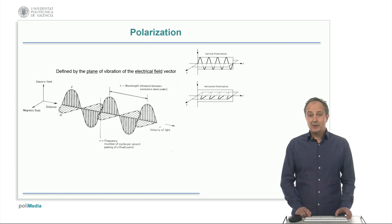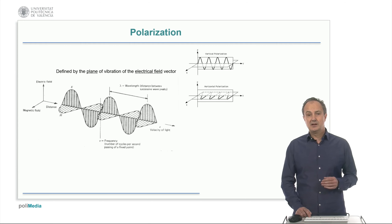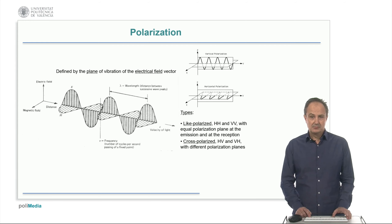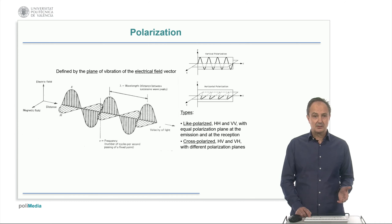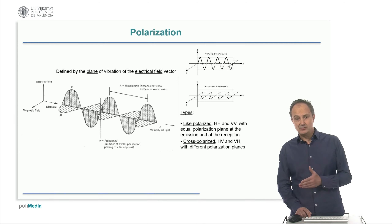Electromagnetic radiation propagates orthogonally to the electric and magnetic fields. The polarization component of a system is defined by the plane of vibration of the electric field, and it can be horizontal or vertical. There are four basic types of radar polarization. Two like-polarized: horizontal-horizontal and vertical-vertical, with equal polarization plane at emission and reception. And two cross-polarized: horizontal-vertical and vertical-horizontal, with different polarization planes.